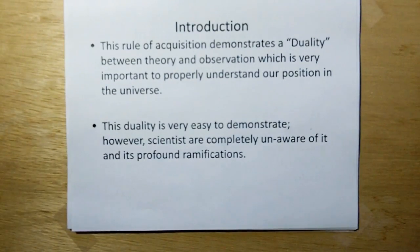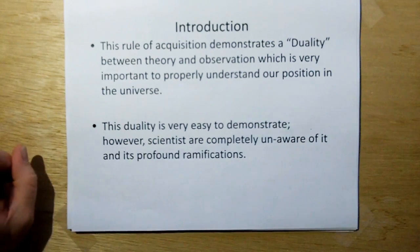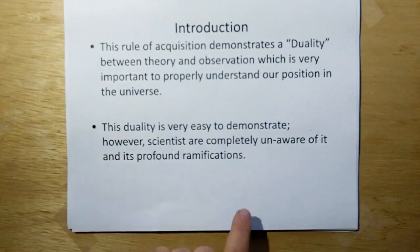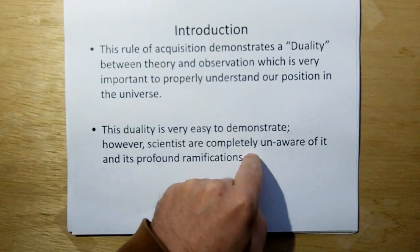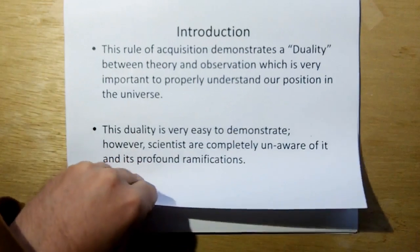This Rule of Acquisition demonstrates a duality between theory and observation, which is very important to properly understand our position in the universe. This duality is very easy to demonstrate. However, scientists are completely unaware of it and its profound ramifications.